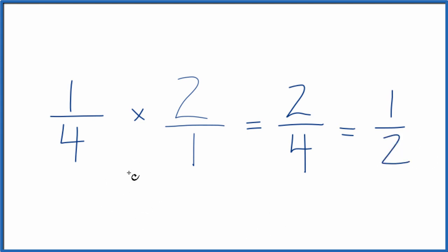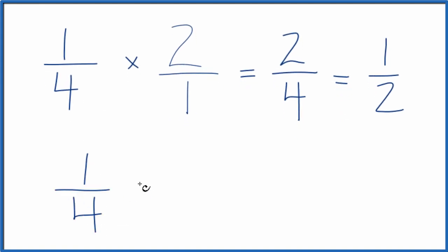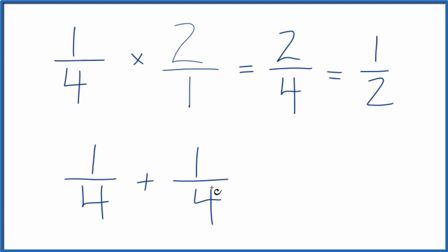The other way to think about this: since we have 1/4 times 2, that means we have one 1/4, and then another 1/4. We have two 1/4s.